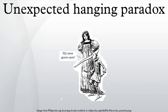The unexpected hanging paradox or hangman paradox is a paradox about a person's expectations about the timing of a future event that he is told will occur at an unexpected time.